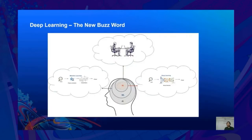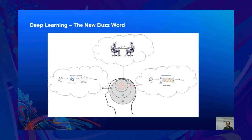I'm sure everyone would agree that deep learning is the new buzzword in the tech world. The phenomenal rise of interest in this field is credited to its powerful ability of finding answers to questions which were deemed almost unsolvable just a few decades back. This brings us to the question: what really is deep learning?